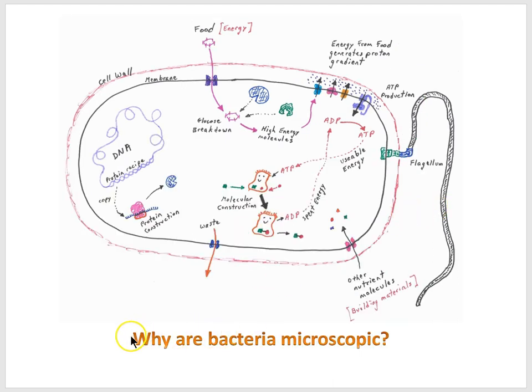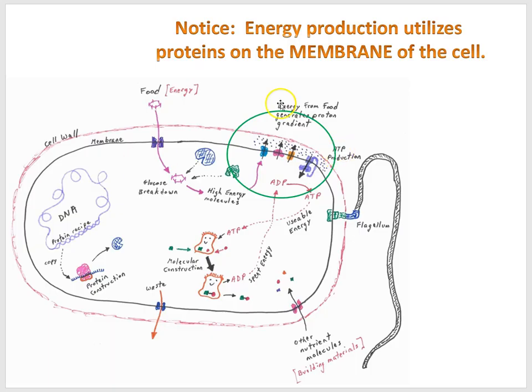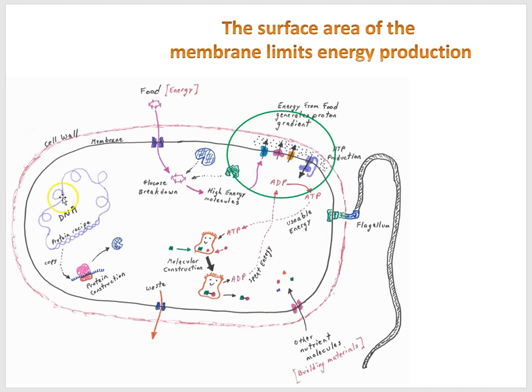Now we're ready then to tackle why are bacteria microscopic? Well, notice the energy production of a cell utilizes proteins on the membrane of the cell. And so the surface area of the cell, which would have these proteins, is going to be a limiting factor in how much energy can be produced by the cell.